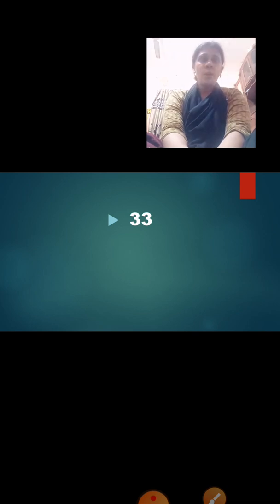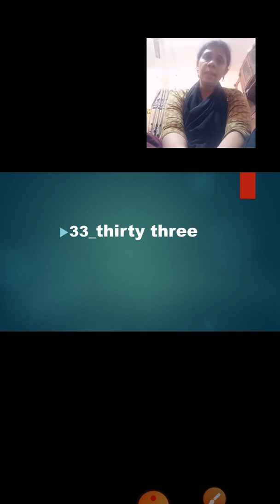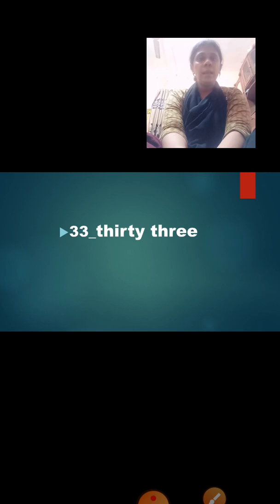Now the next number is 33. When we say it, we say 3, 3 — 33. But while writing, do we write '3' and '3' spelling separately? No. We write T-H-I-R-T-Y T-H-R-E-E — thirty-three. The spelling of 33 is T-H-I-R-T-Y T-H-R-E-E — thirty-three.